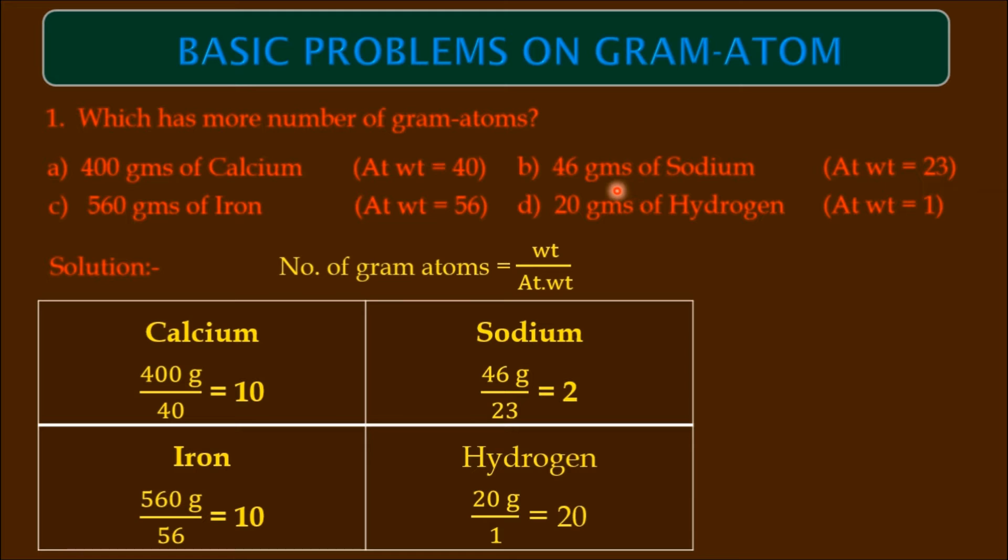In the same manner, 46 grams of sodium divided by atomic weight 23 equals 2 gram atoms. Iron: 560 grams by atomic weight 56 equals 10. Hydrogen: 20 grams by atomic weight 1, so 20 by 1 equals 20.